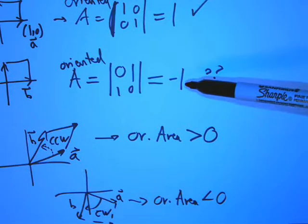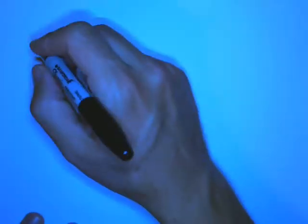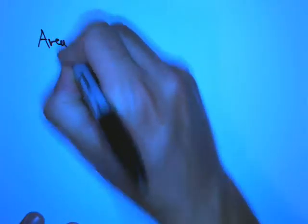Okay, here's a notational thing. The area, here's an unpleasant way to write it. You take the determinant of the matrix with these vertical bars.